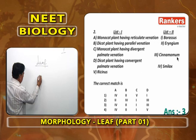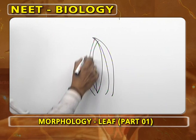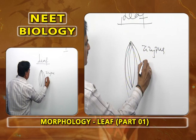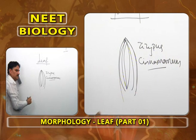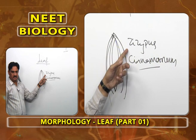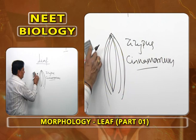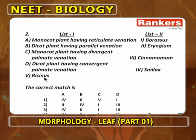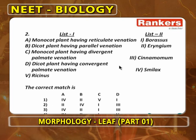Dicot plant with convergent palmate venation: many prominent midribs are present at the base but ultimately unite at the apex, with remaining veins arranged in a reticulate manner. Examples are Ziziphus and Cinnamomum. In Ziziphus, stipules are modified into spines. In Cinnamomum, the bark is used as a spice. So the answer for this matching question is 4, 2, 1, 3.